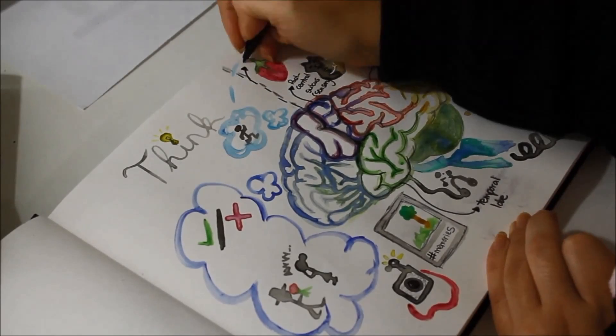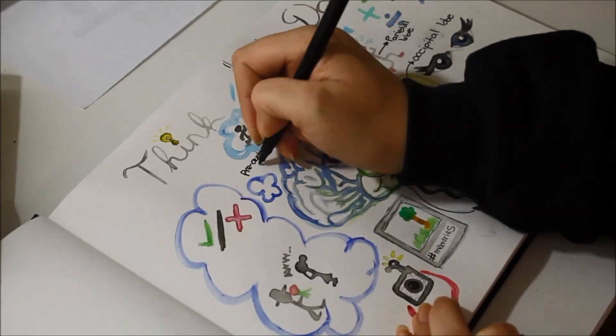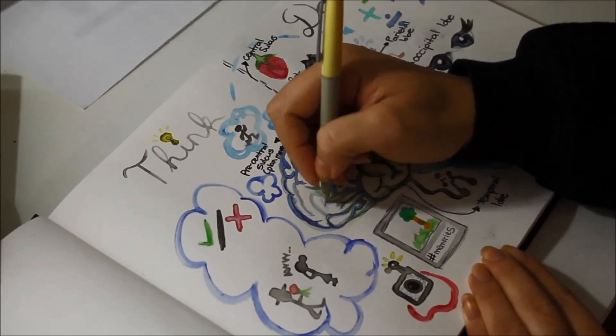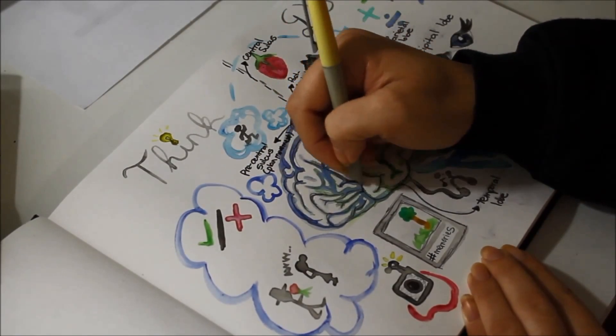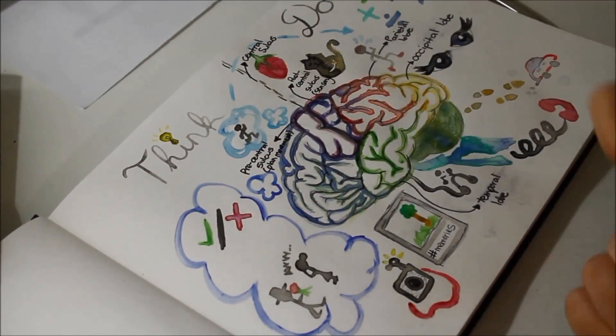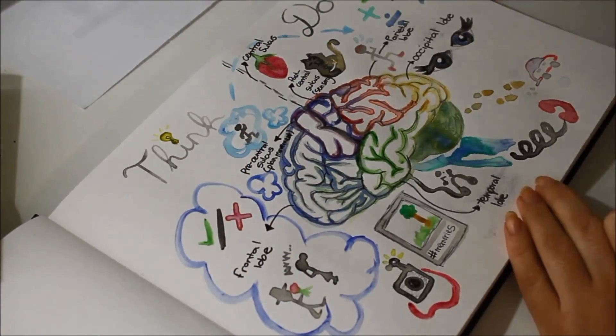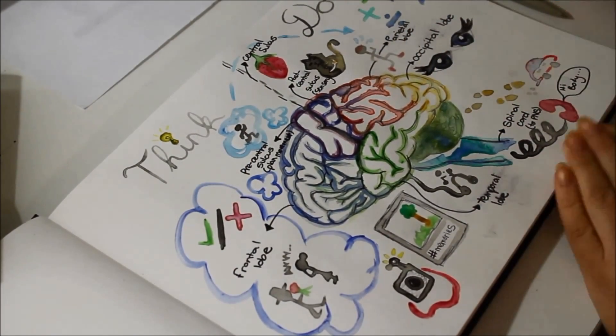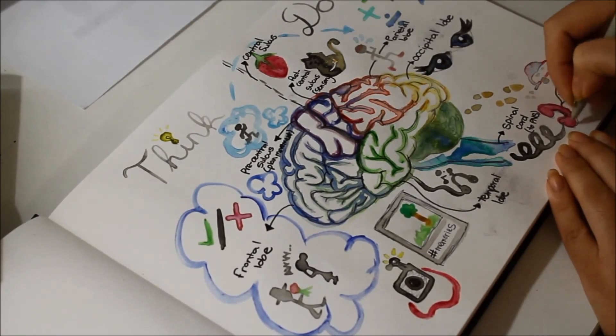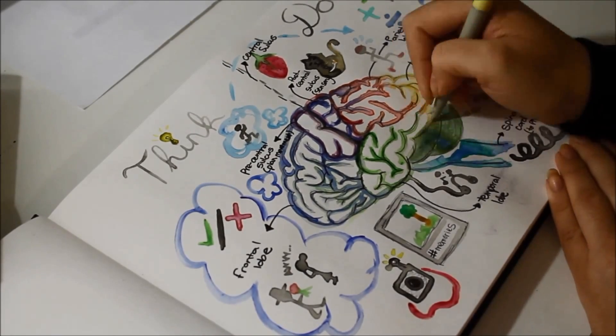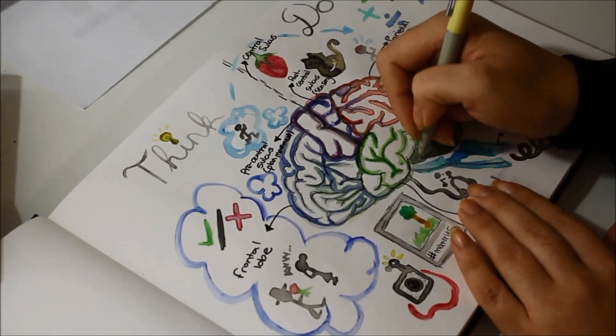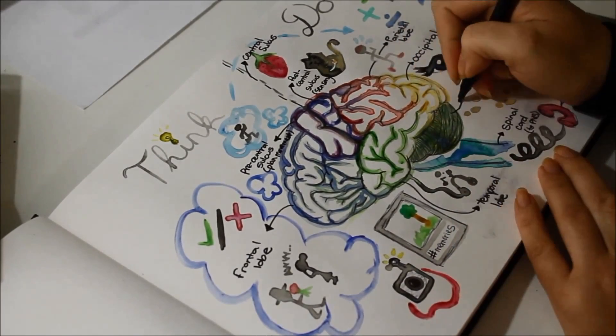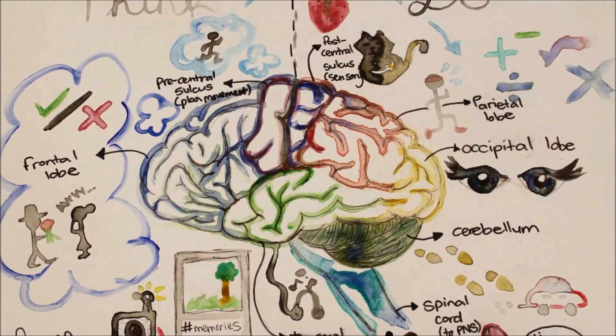The pre-central sulcus and gyrus, again, are planning movement, sending all that information to the parietal lobe so we can actually move, while our frontal lobe is thinking about the more important questions in life, like philosophy and what other amazing thoughts it's going to send down our spinal cord to the rest of our body. Finally, the beautiful thing called the cerebellum, keeping us walking straight and driving not into trees. Have an awesome day!